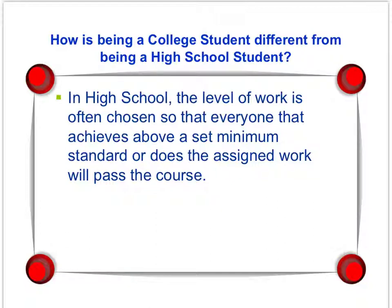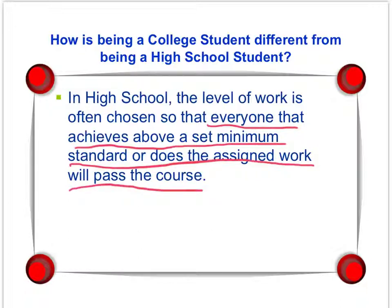Another difference is the level of work and understanding. In high school, the level of work is chosen in most standard classes — not AP classes — so that everyone who achieves above a set minimum standard or does the assigned work will pass the course. The goal for the average high school course is that everybody should be able to understand what is presented and pass the course, if they stayed awake and paid attention. We all know the people we went to high school with who did neither of those two things.